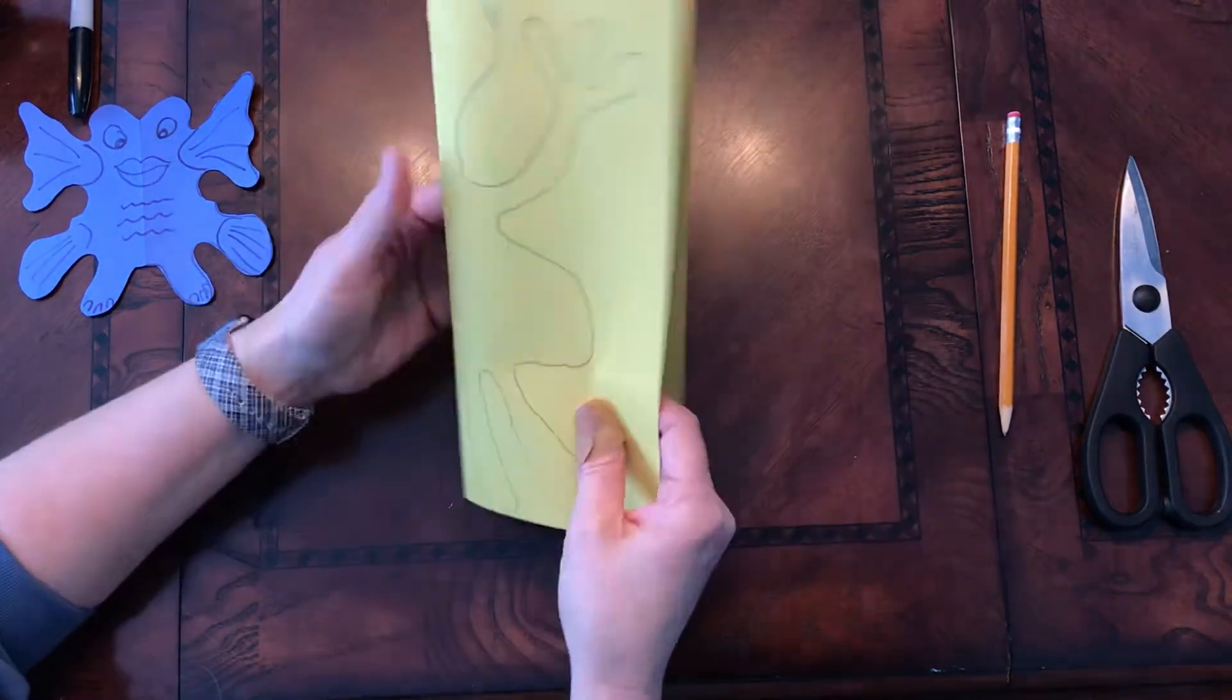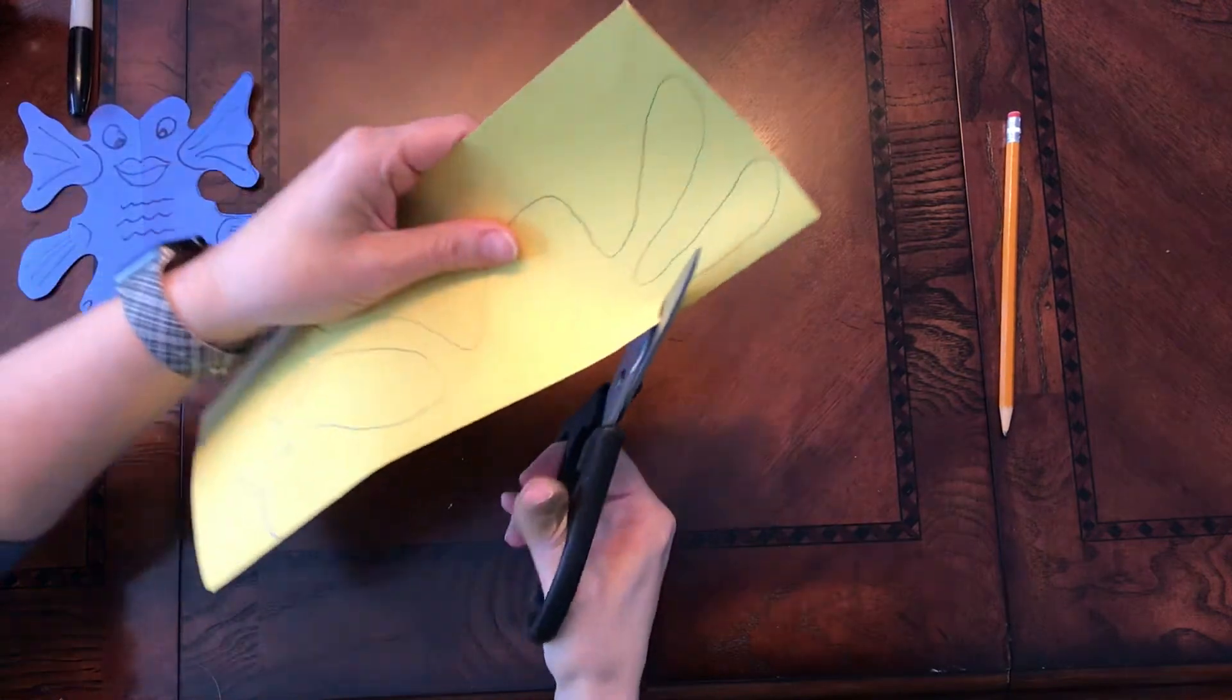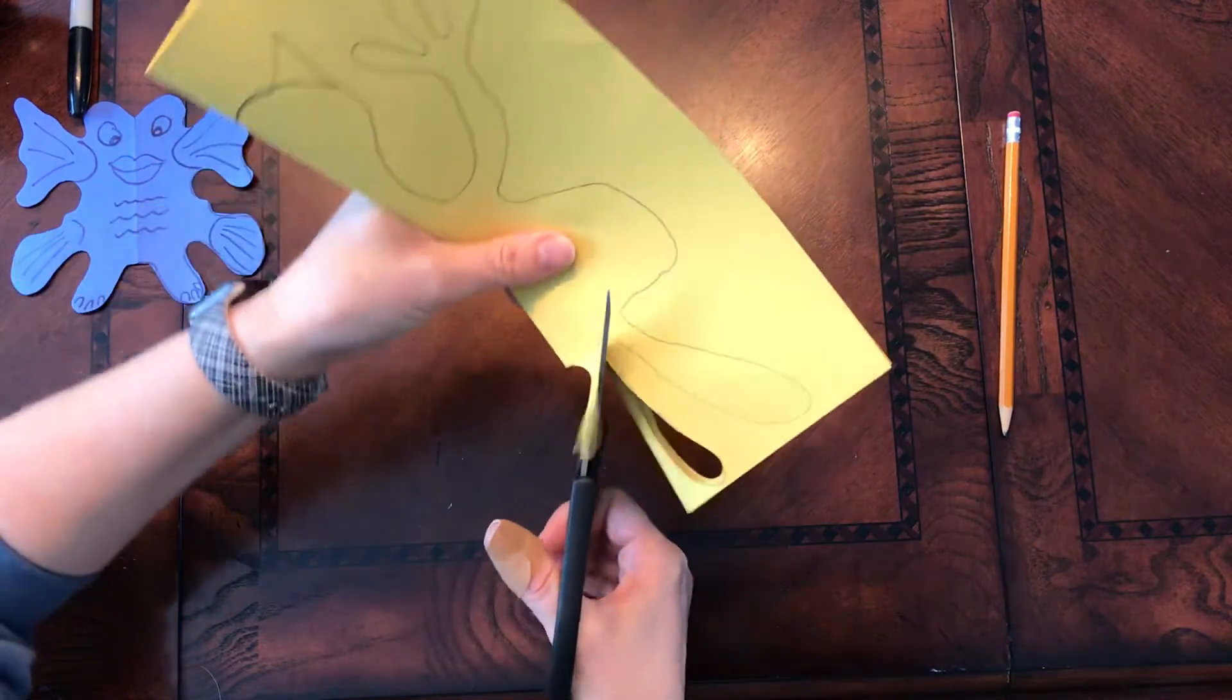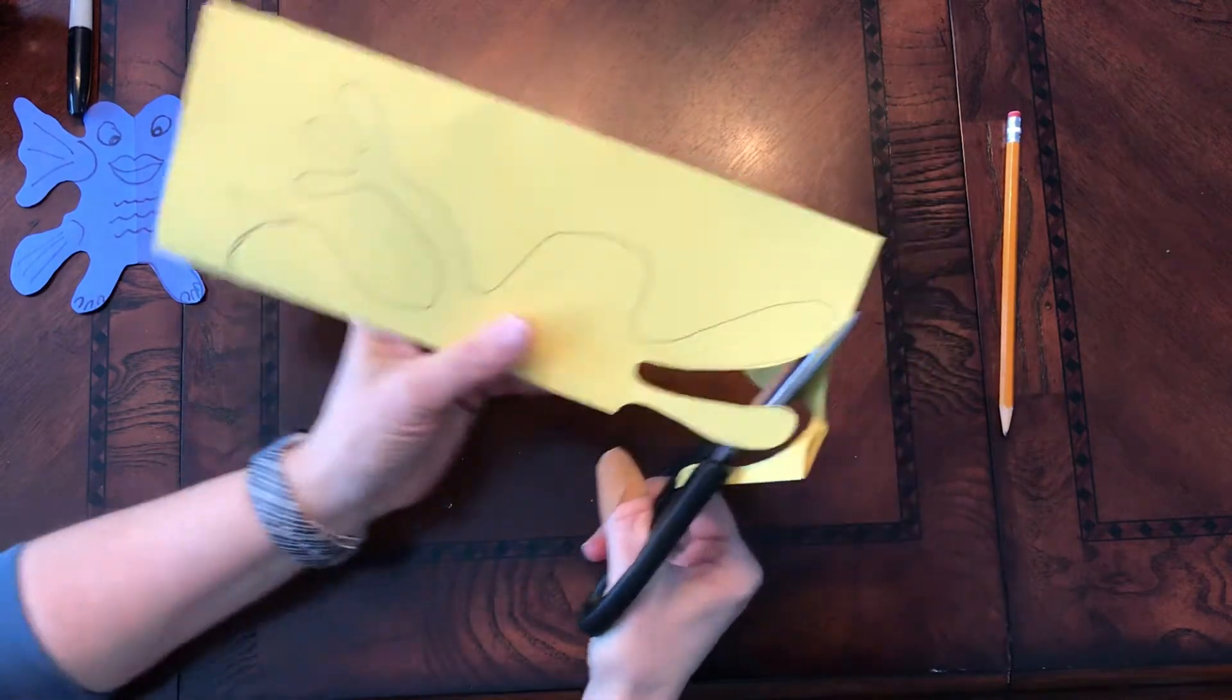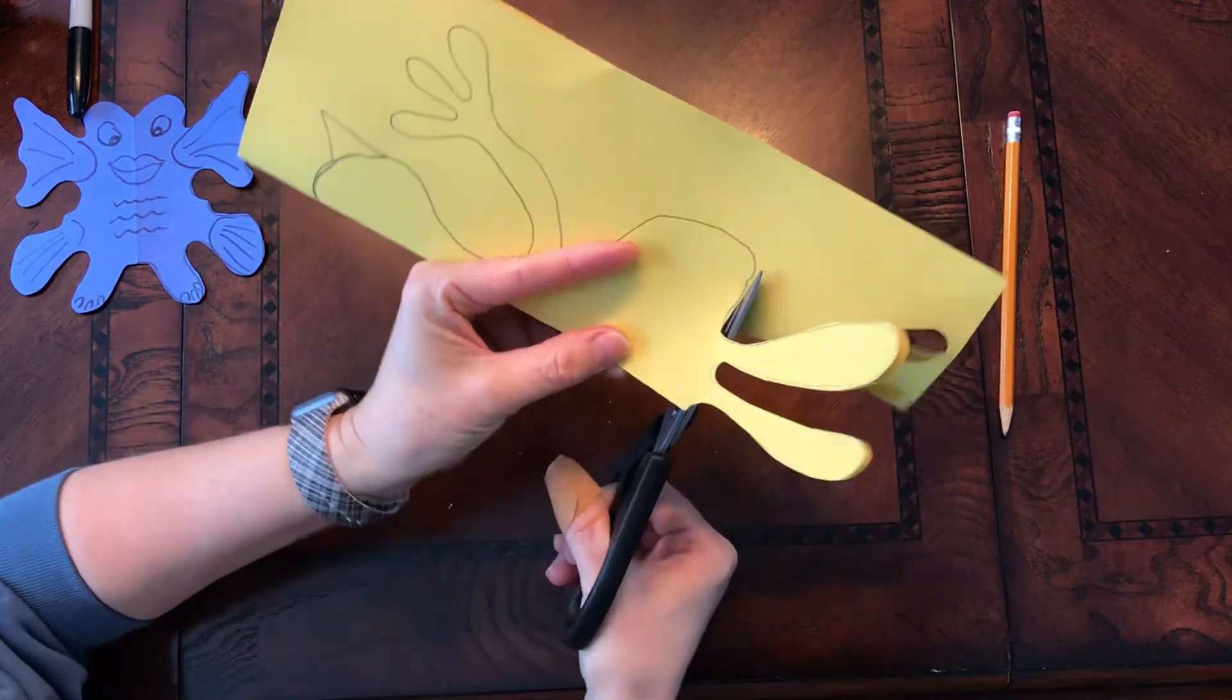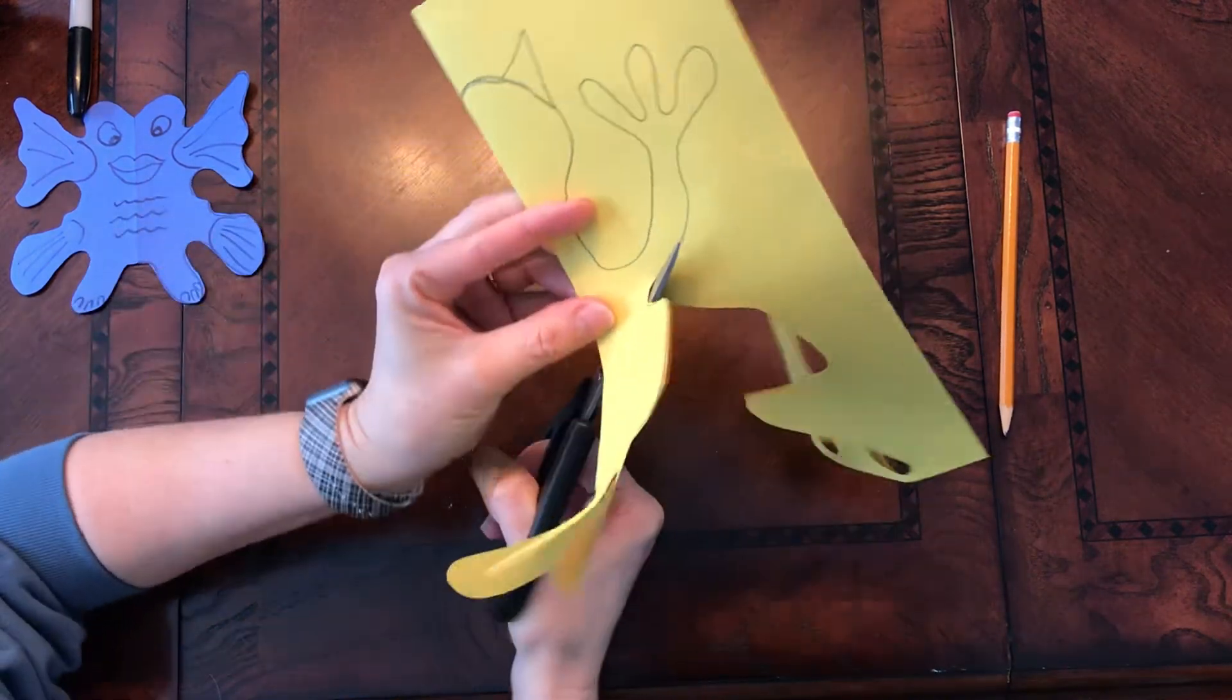So this is my creature right here. So I'm going to go ahead, and I am going to cut my creature out. Now we want to make sure we try not to cut inside the lines, try and cut on the lines, or outside the lines. We don't want to make your creature any smaller than it already is. And hopefully you've used up a good amount of space.